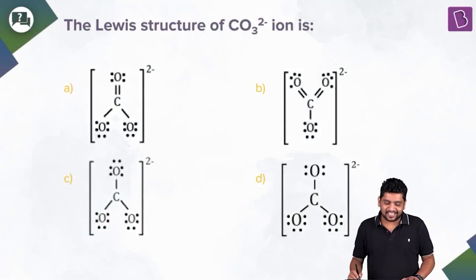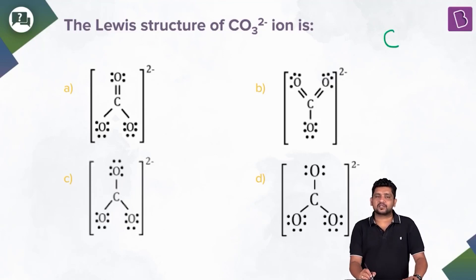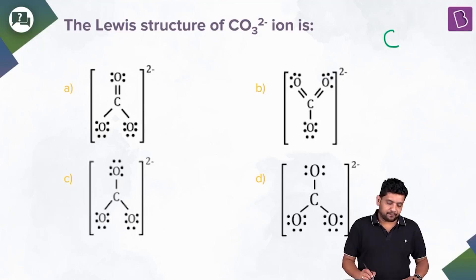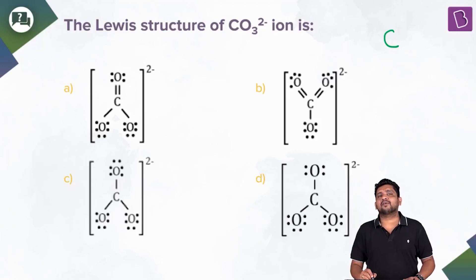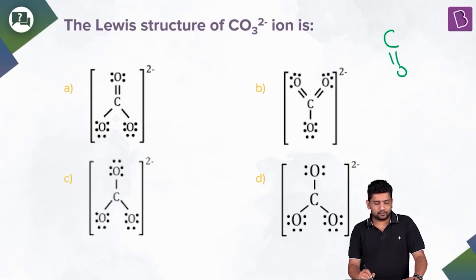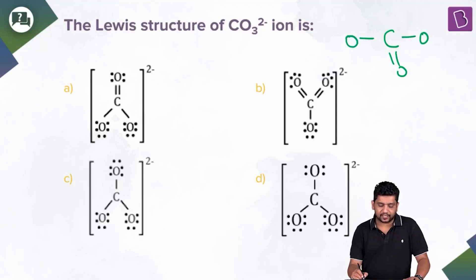This question asks for the Lewis structure of the CO₃²⁻ ion. First, we choose carbon as the central atom — it has the maximum bonding capacity and is the most electropositive. In Lewis theory, we ensure every atom completes its octet. Carbon can form a maximum of four bonds; with three oxygen atoms, one oxygen forms a double bond with carbon.